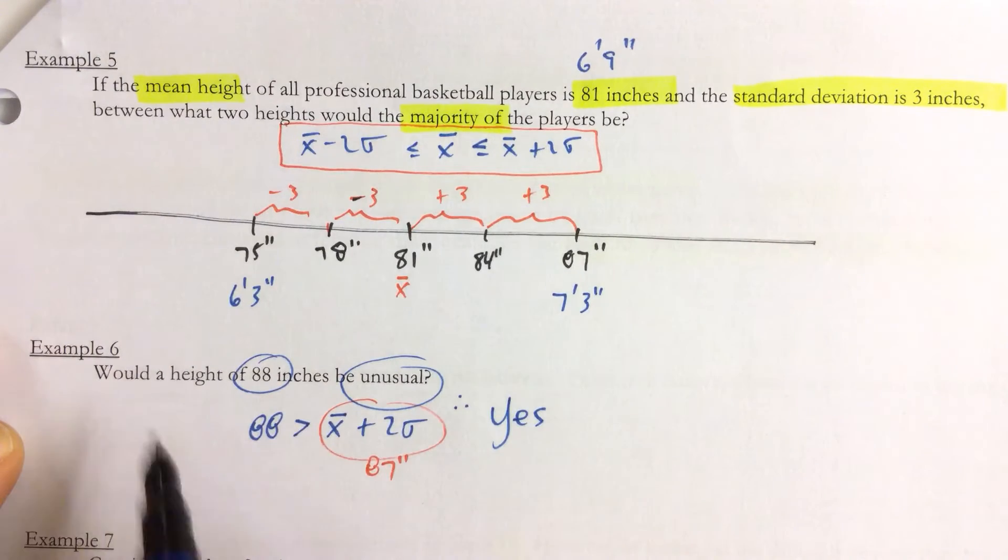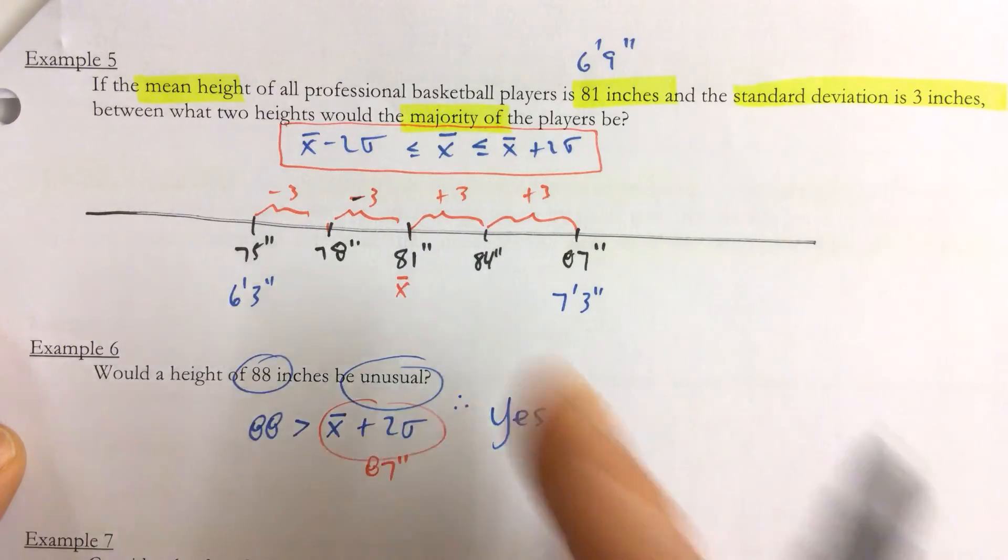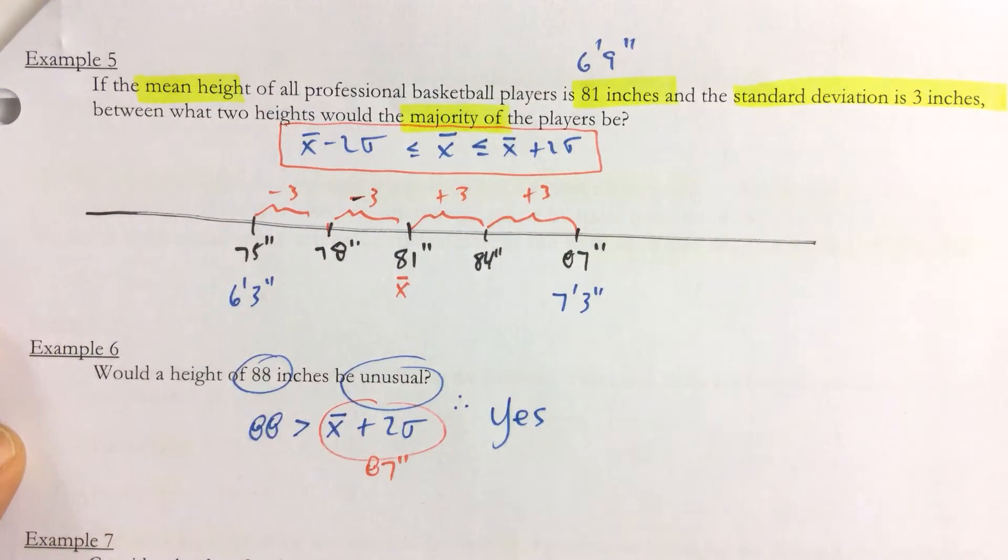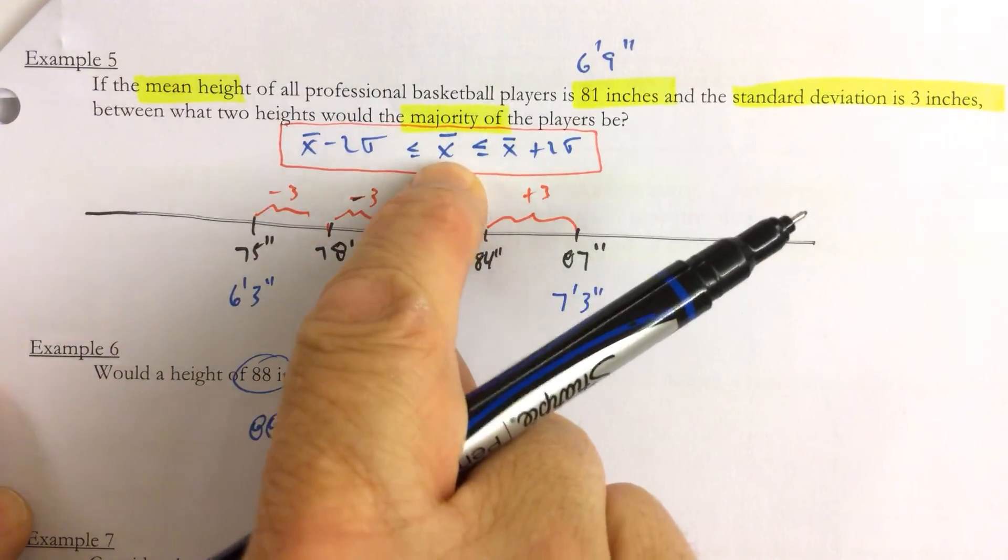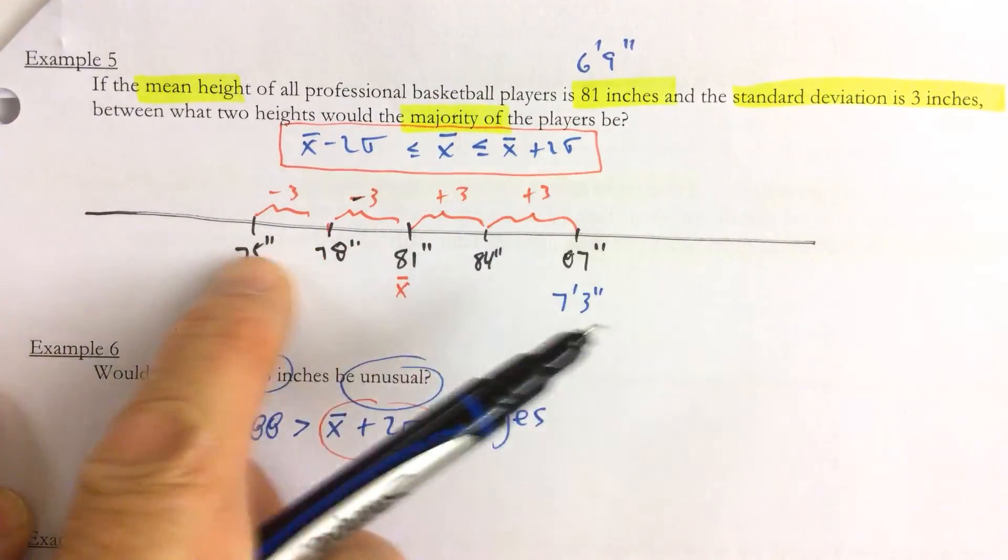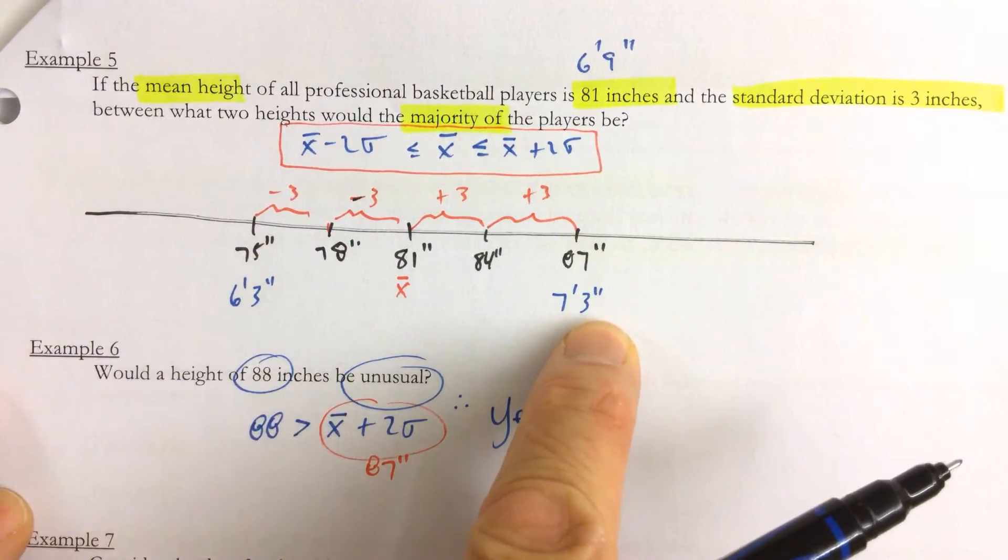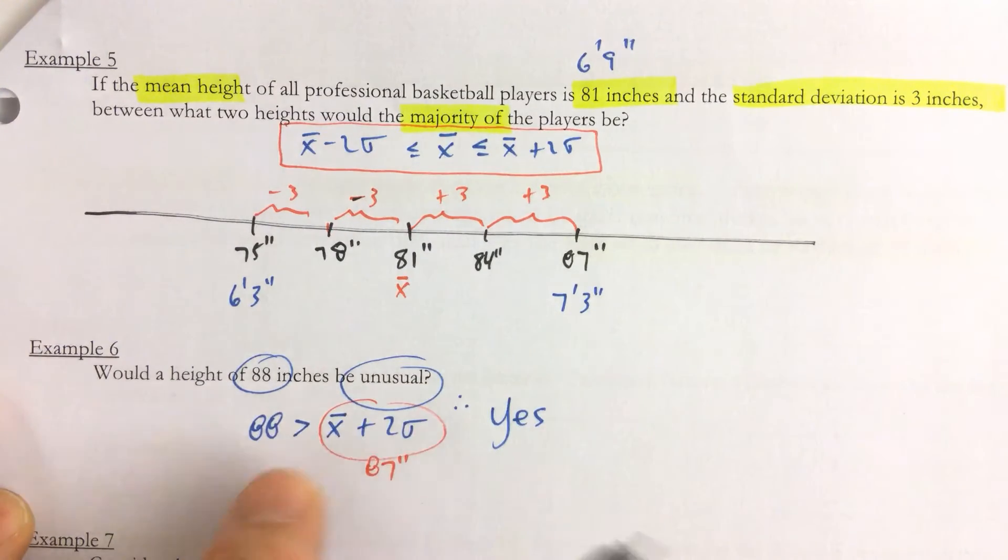Therefore, yes. And so that's how you answer these questions. If you're asked to find if a number of inches or the height of an NBA player is a normal value, then all you would have to say is it's normal if it's between these two numbers, and it's unusual if it's outside.